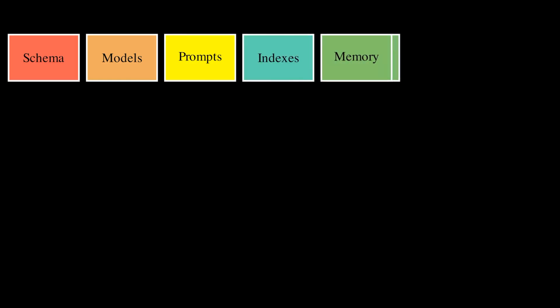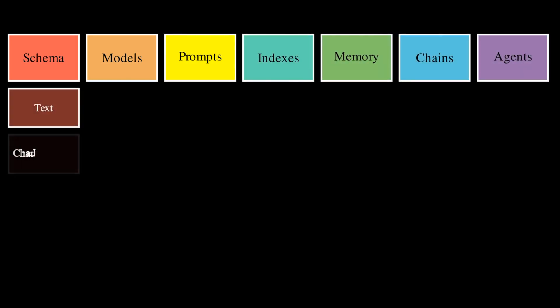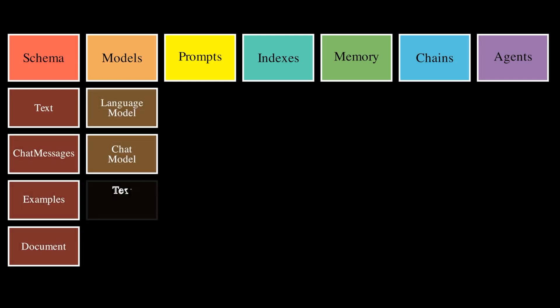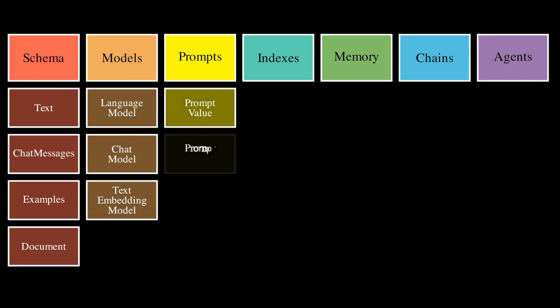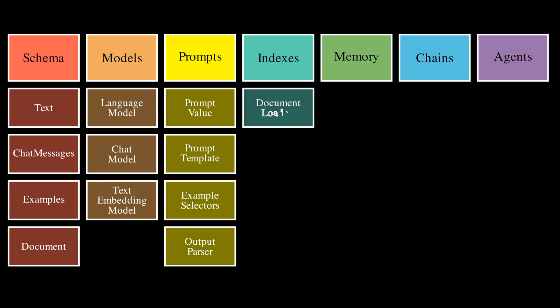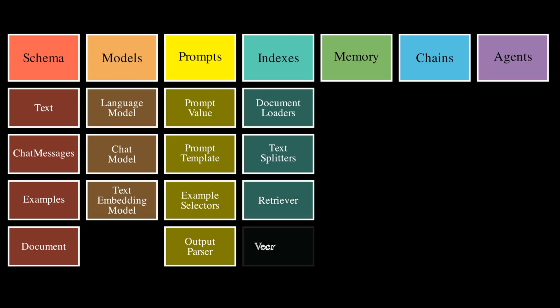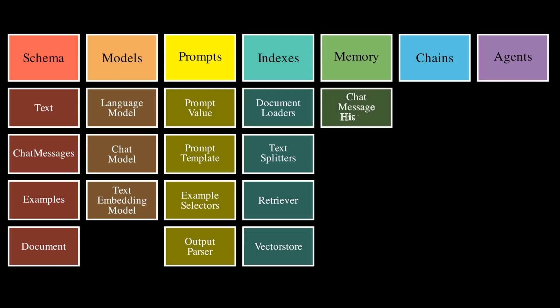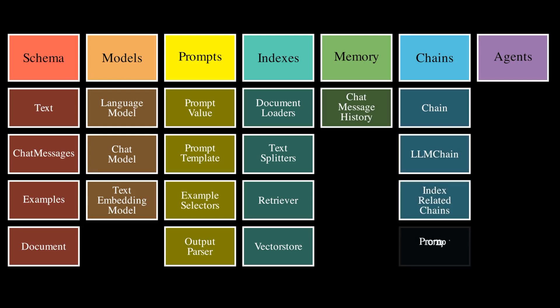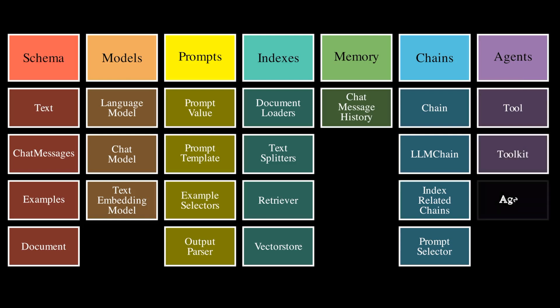So there you have it — a comprehensive breakdown of Langchain and its components. It's like an orchestra, with each part playing a unique, crucial role, coming together to create a beautiful symphony of AI-powered applications. The analogy of an orchestra or a biological organism can help you visualize and understand how Langchain and its components work together seamlessly. This framework is not just about powering applications with LLMs — it's about creating a whole new level of interactive, intelligent, and adaptive applications.